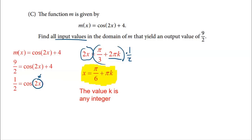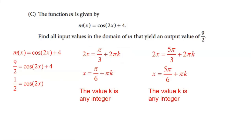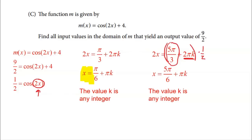But from the unit circle, there's a second angle that produces a cosine value of one half: five pi over three. So two X equals five pi over three plus two pi K, and dividing everything by two gives X equals five pi over six plus pi K. The two final solutions are X equals pi over six plus pi K and X equals five pi over six plus pi K.